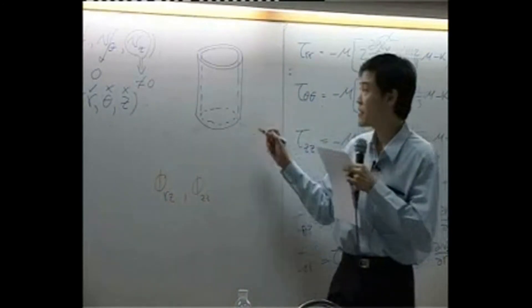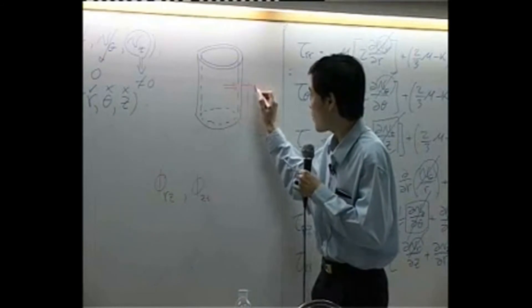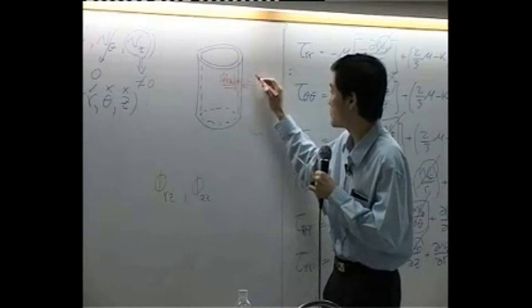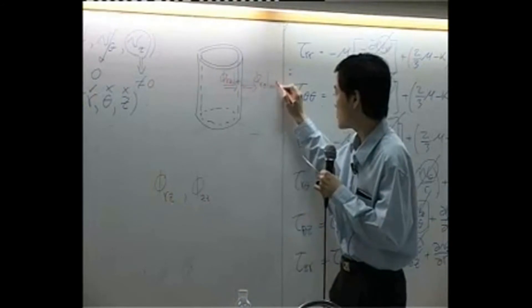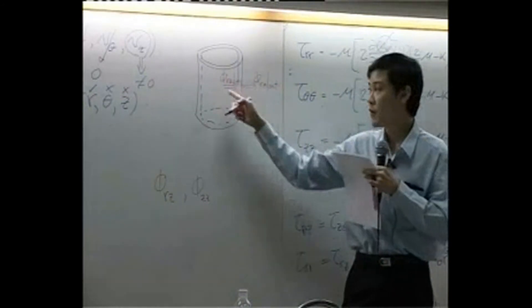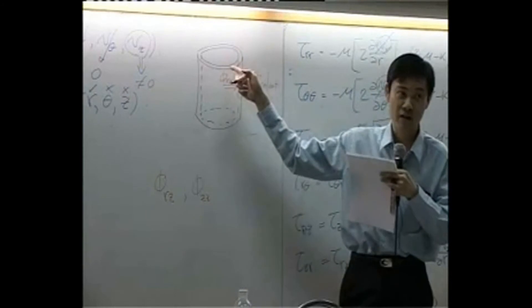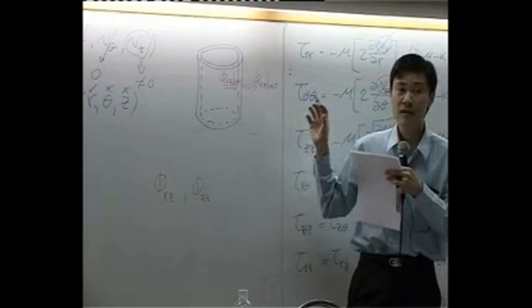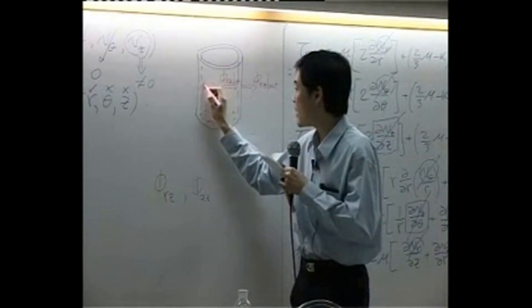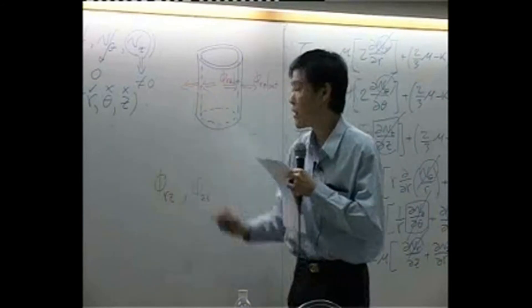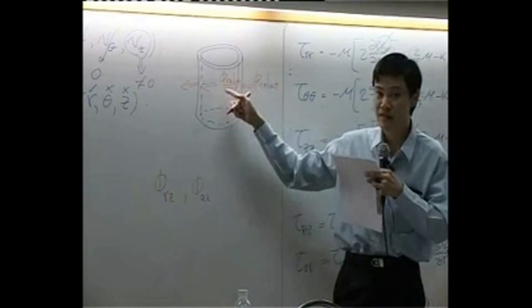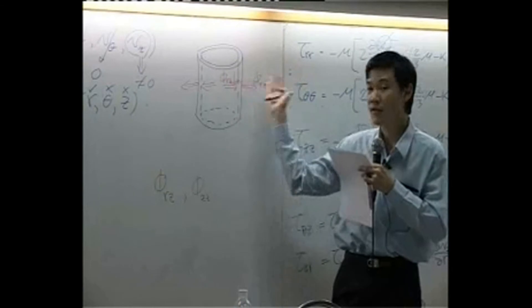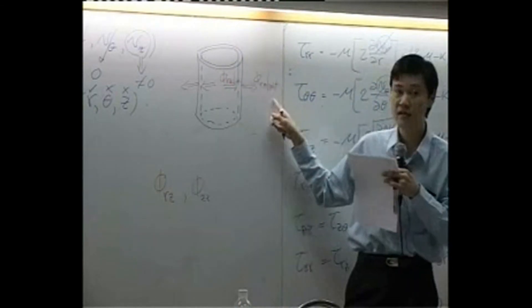VRZ going in means flux going into the shell from inside of the cylinder, and VRZ coming out means leaving from the outside surface. In cylindrical coordinates, anything from the center going into the shell is called VRZ in, and from the outer surface going outward is VRZ out.